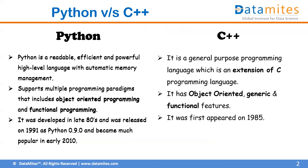Let's get started with a few key points. Python is a readable, efficient, and very powerful high-level general purpose programming language with automatic memory management. It uses English-based syntax that is very easy to use, write, and read. Being a general purpose language, it is not bounded by any constraints — it is used for software development, software testing, application development, Android and iOS development, as well as machine learning and data science.